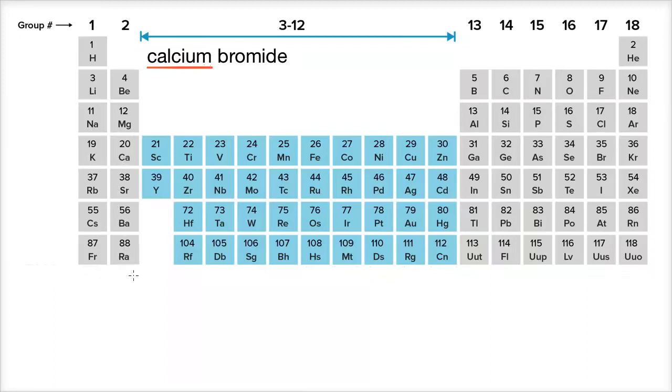Now let's look at the periodic table to confirm that it's likely that calcium would ionize as a cation. Well, calcium is right over here in group two. And group two elements, also known as alkaline earth metals, they tend to ionize by losing two electrons.